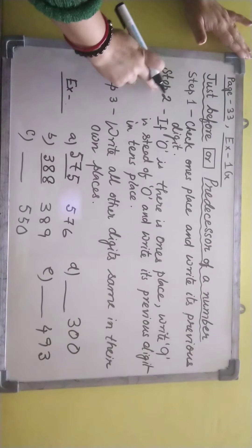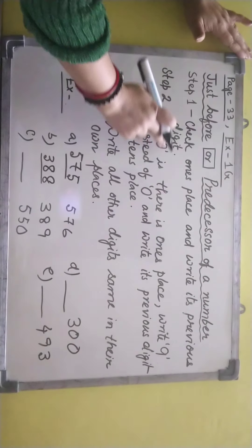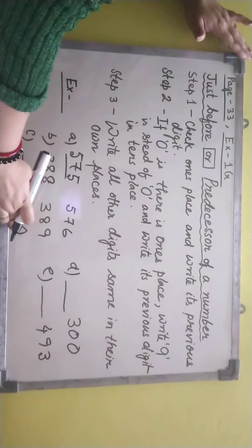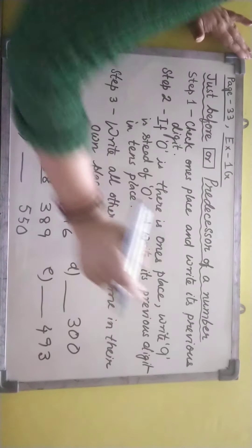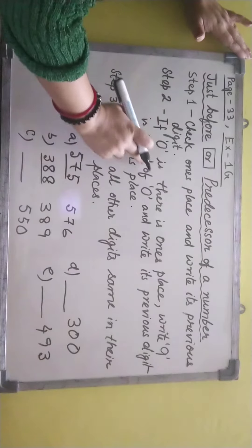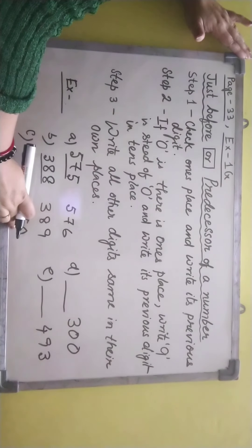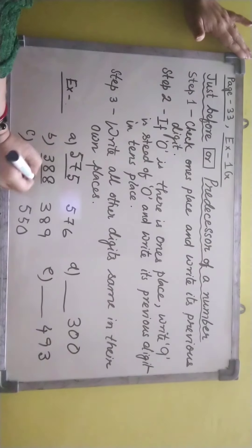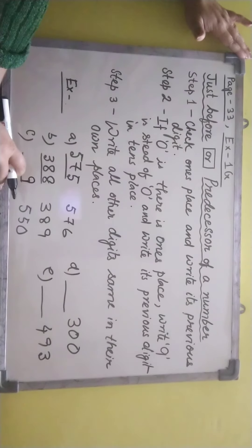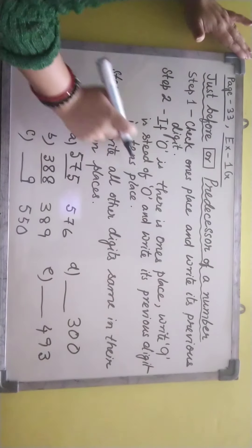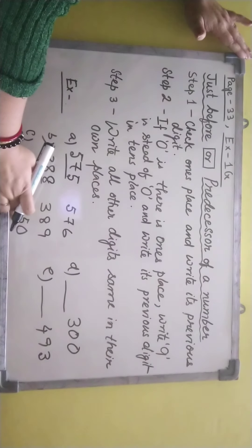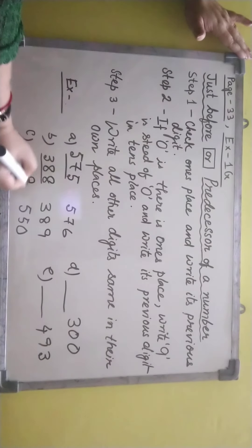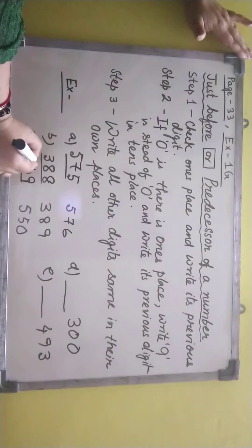Now we come to step 2: if 0 is in one's place. In one's place 0 is there — write 9 instead of 0. And write its previous digit in the tens place. The previous digit of 5 is 4. So I wrote it like this.